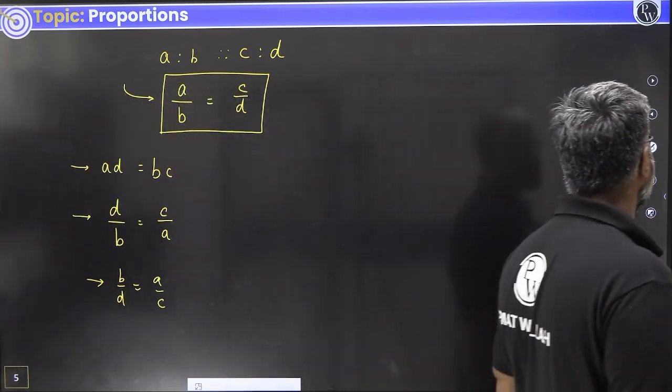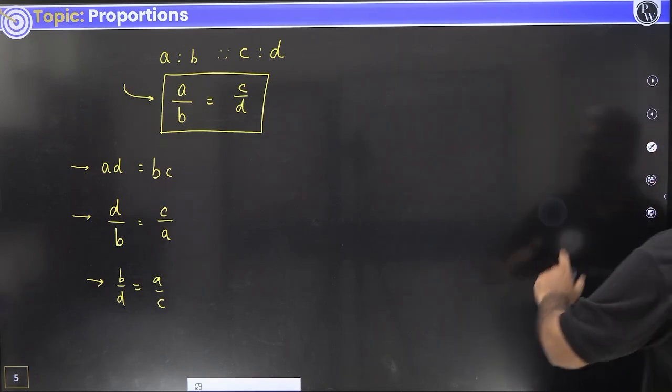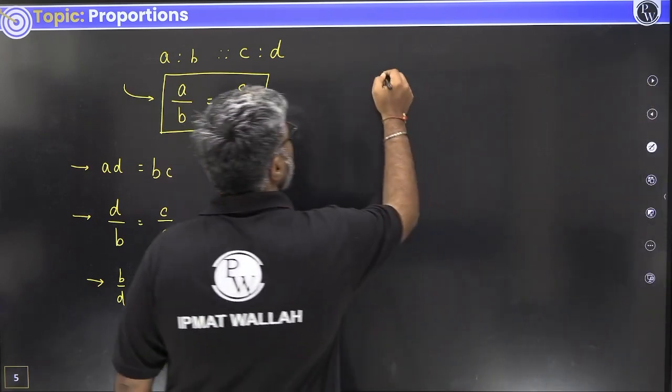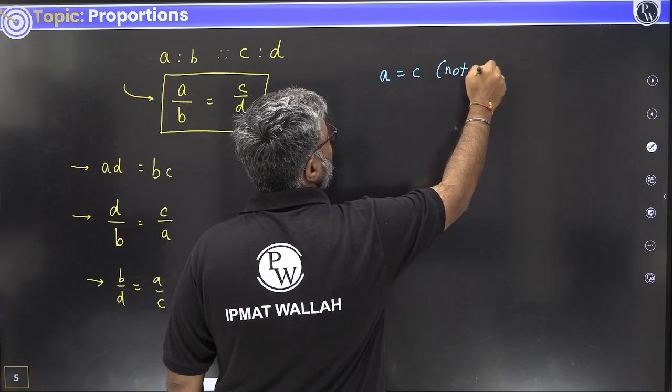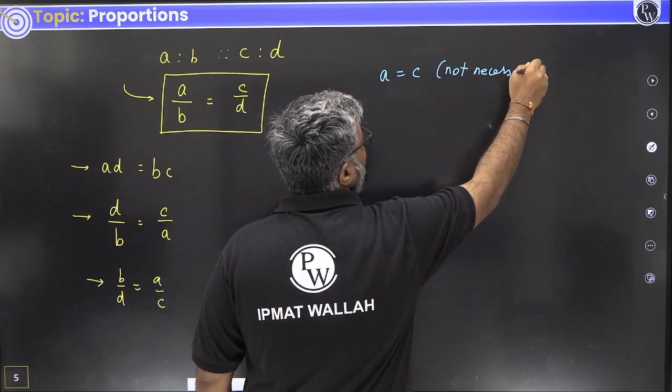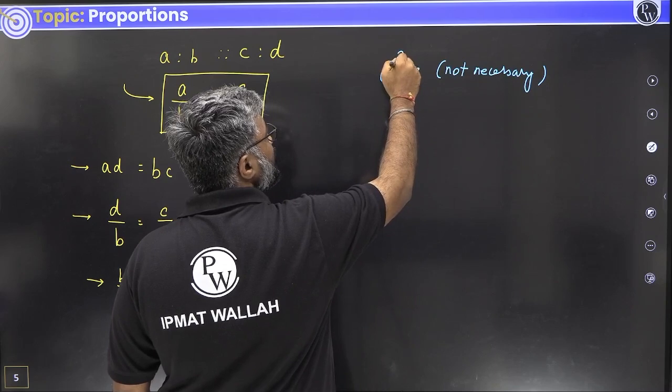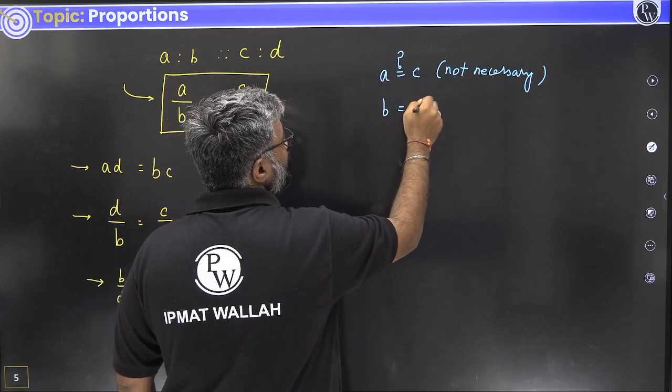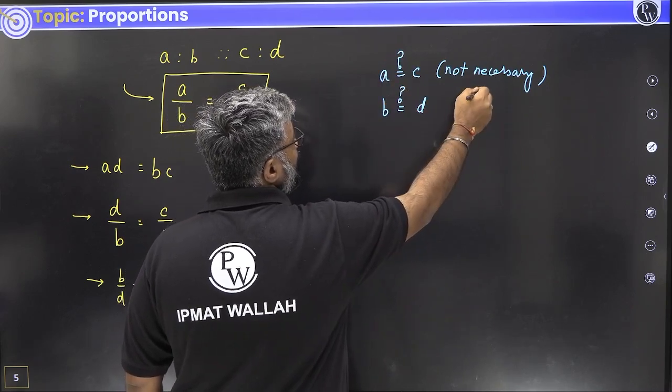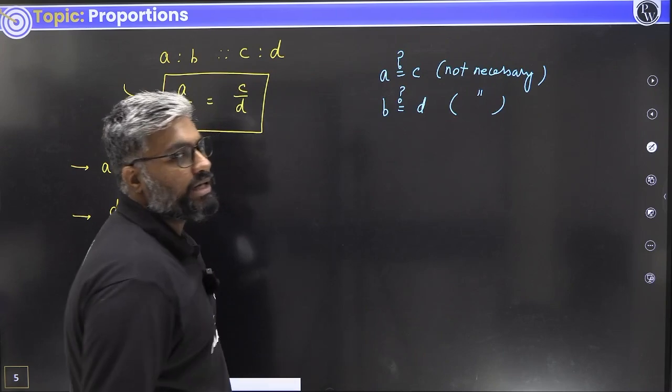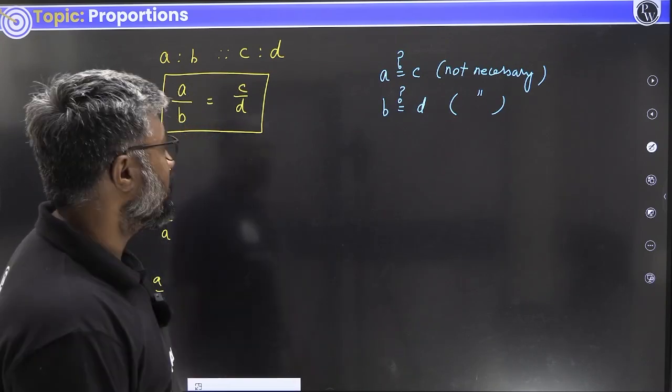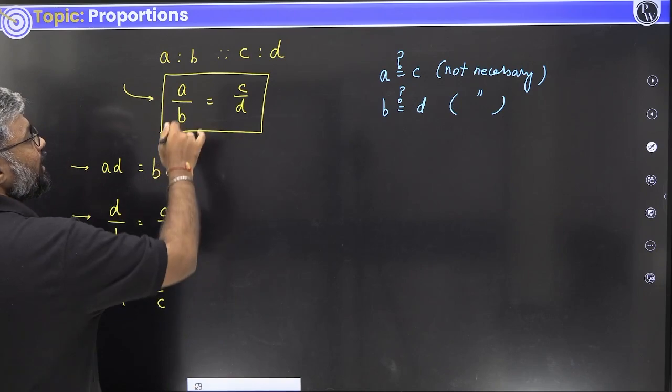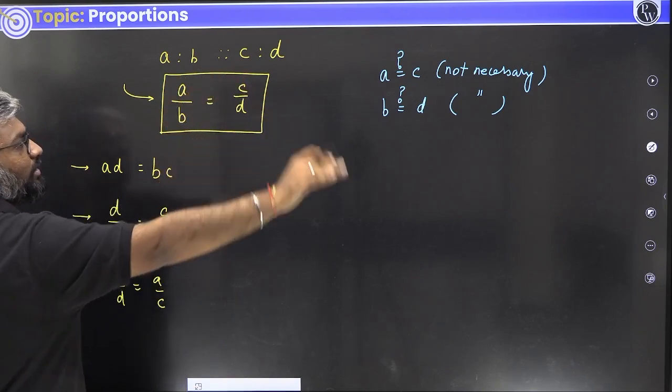Now understand the ratios are equal, it may not mean that A and C are equal. A equal to C not necessary. It could be, it may not be. A big question mark on this. Same way B equal to D is a big question mark. It is not necessary that B and D are equal, and it is not necessary that they are not equal also. Just know that their ratios are equal. That's it.